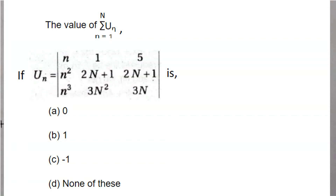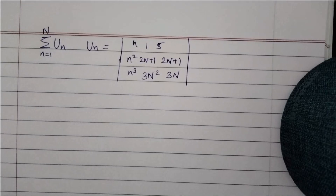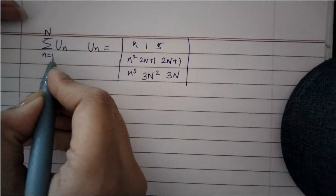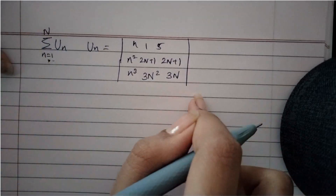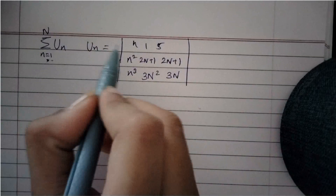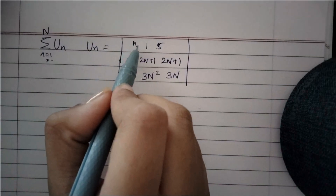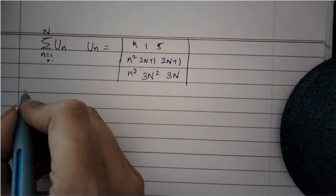The question asks: what is the value of sigma u_n, where n ranges from 1 to capital N, and the determinant u_n is given. We know that n will range from 1 to N, so this sigma denotes addition of all the determinants where the value of n varies from 1 to N.